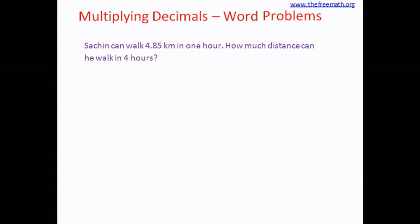The distance walked in one hour is 4.85, and the number of hours are 4. So if we want to calculate the total distance, it would be four times the distance in one hour.